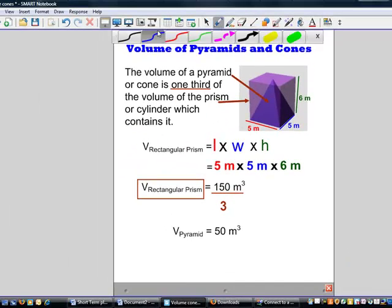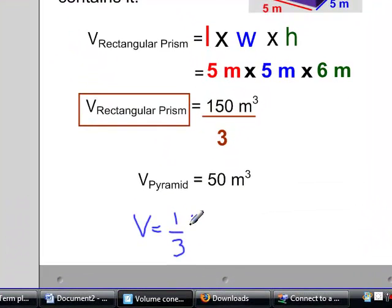This leaves us with the formula for the volume of a pyramid. The formula is one-third length times width times height.